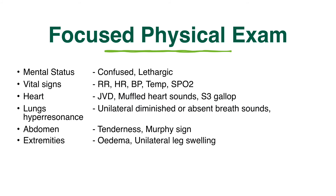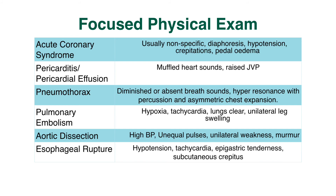By considering the differential diagnosis with the history already obtained, perform a focused physical examination. Acute coronary syndromes usually have nonspecific signs; they may be associated with diaphoresis, hypotension, crepitations on the lung, or pedal edema. Pericarditis or pericardial effusion may have muffled heart sounds and a raised JVP. Findings that suggest pneumothorax include diminished or absent breath sounds, hyperresonance with percussion, and asymmetrical chest expansion. Pulmonary embolism can have low oxygen saturations, tachycardia, and normal breath sounds on auscultation of the lungs with an associated unilateral leg swelling.